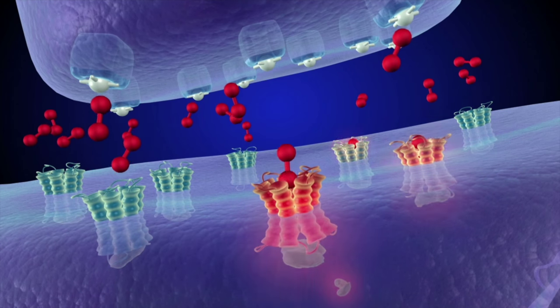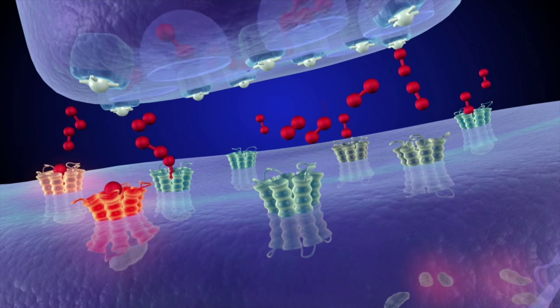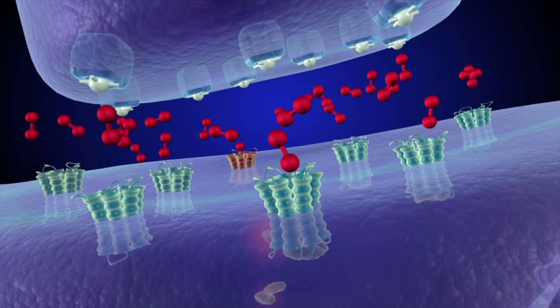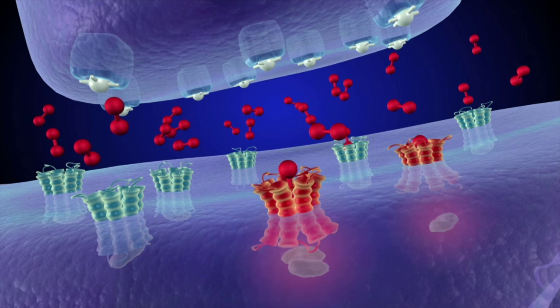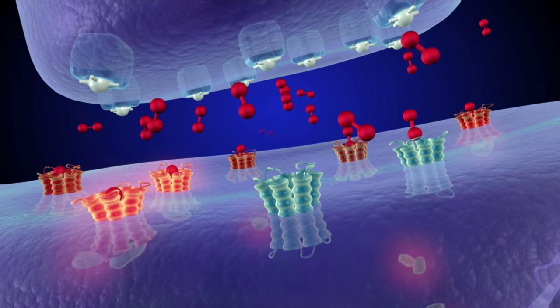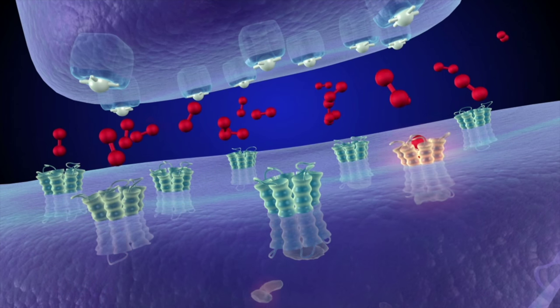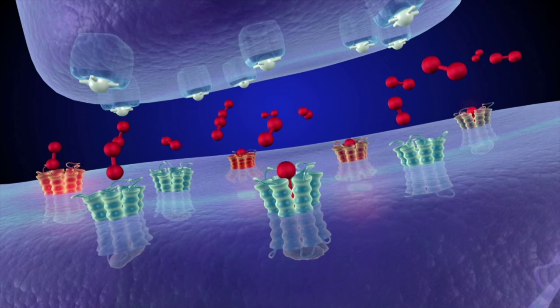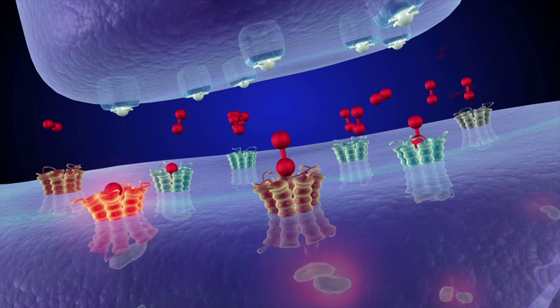The postsynaptic cell becomes hyperactivated, which produces a feeling of euphoria. This creates an incredibly powerful association between cocaine and pleasure, making a person want to repeat the experience of taking the drug.